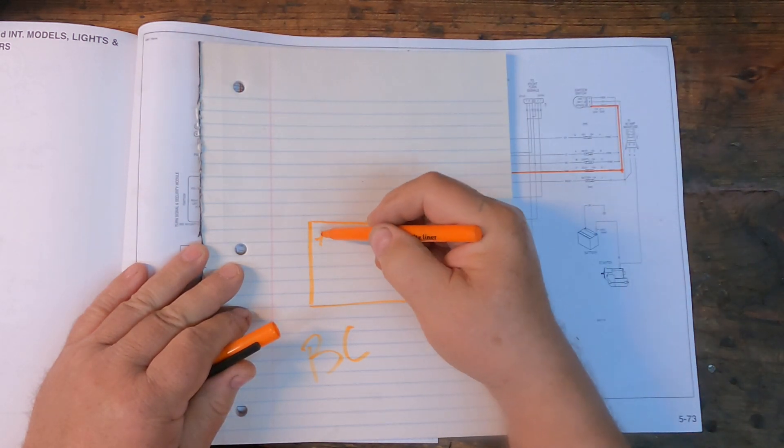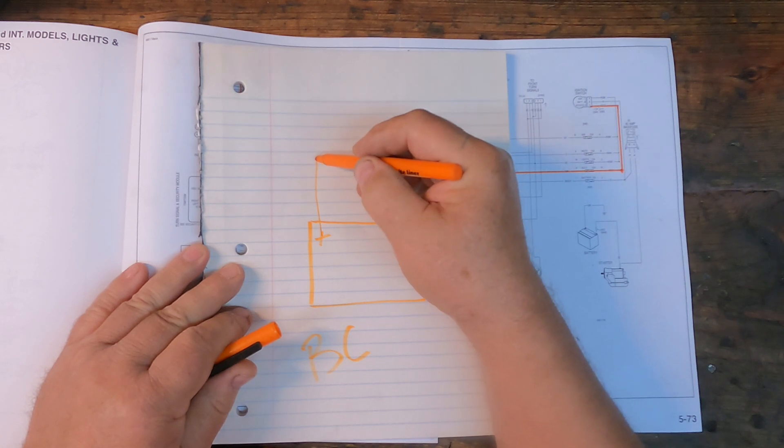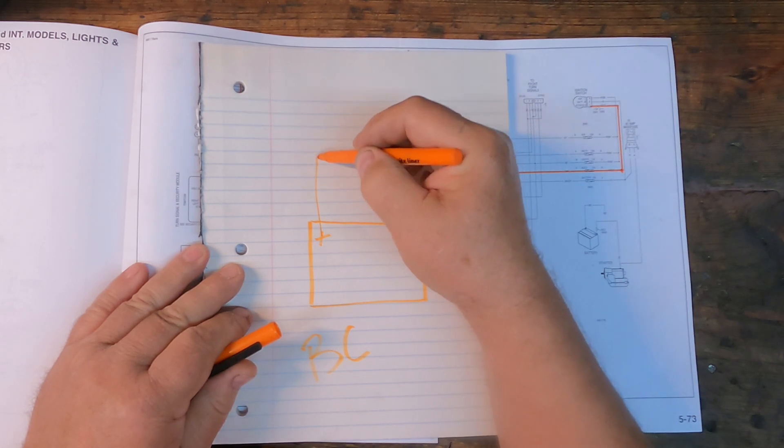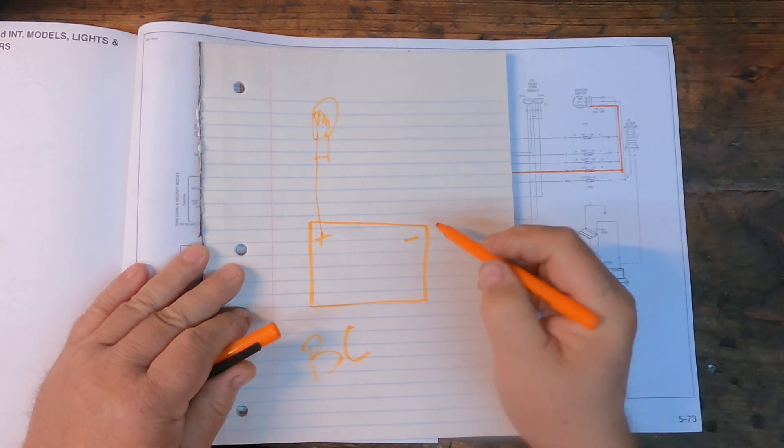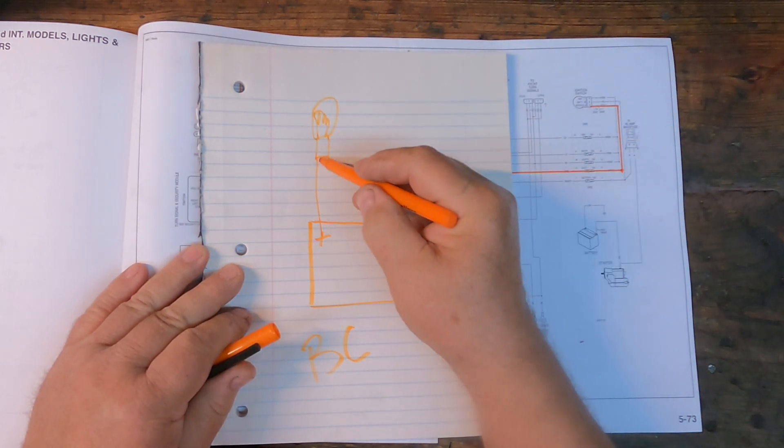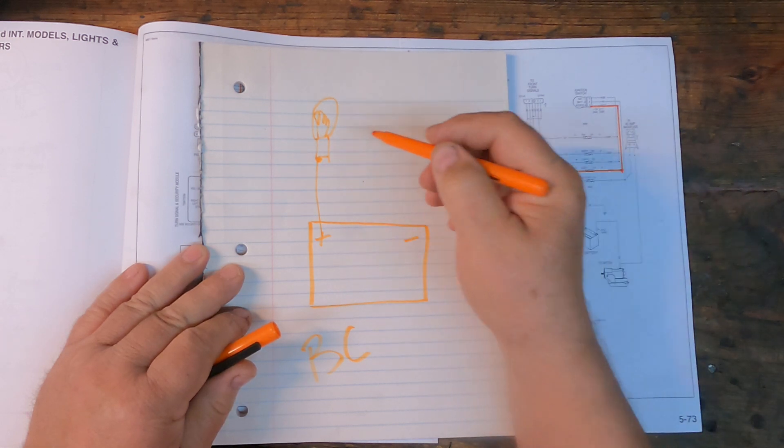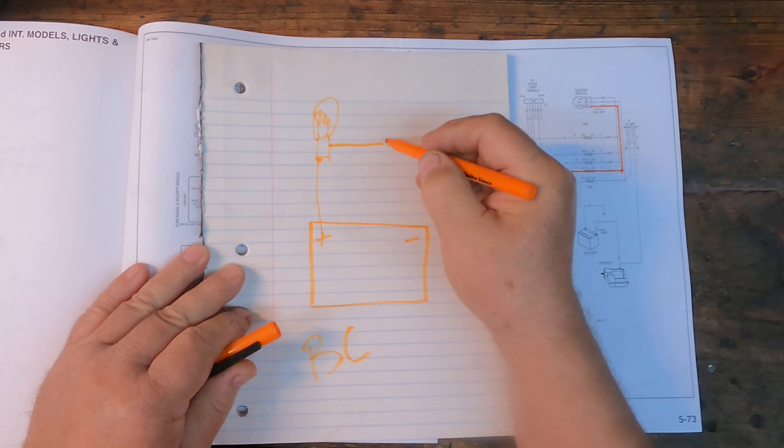But basically to turn a light bulb on, he had a wire that went to the light bulb, and we'll draw a light bulb over here. And one side's connected to one of the terminals on the bottom of the light bulb.